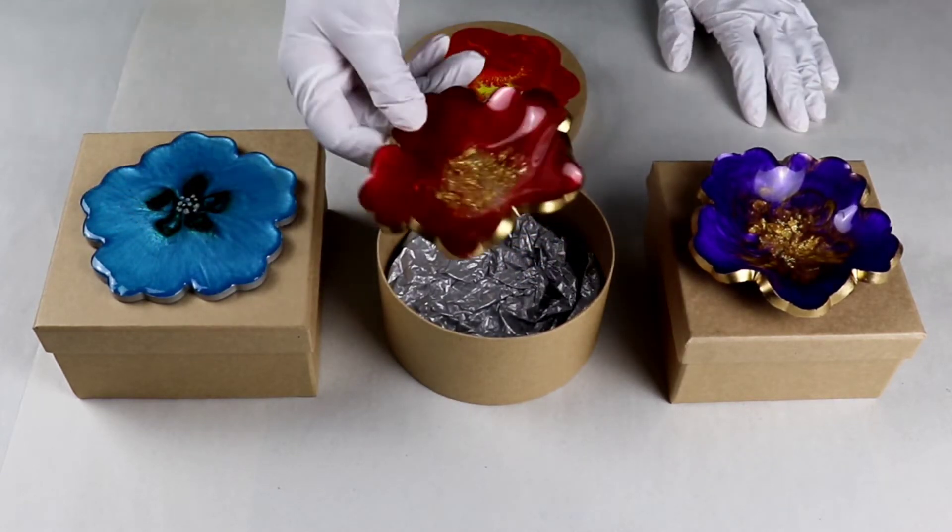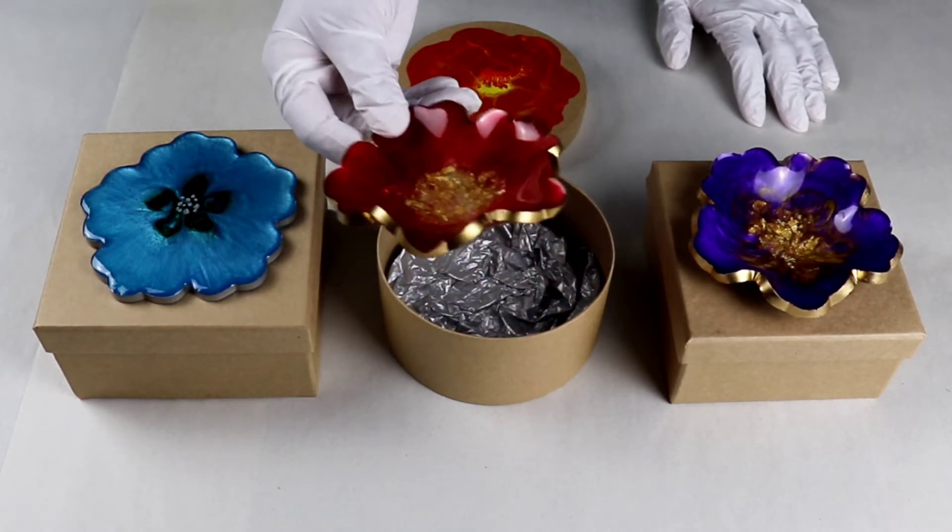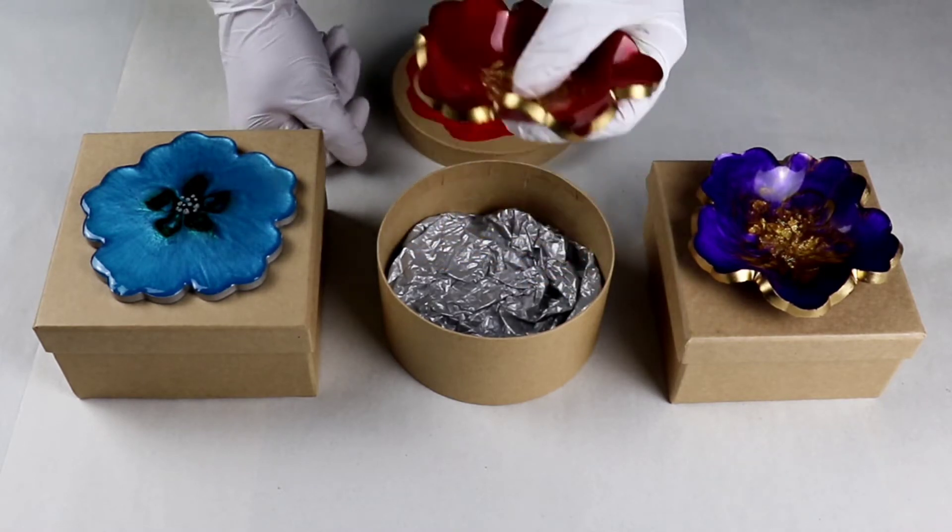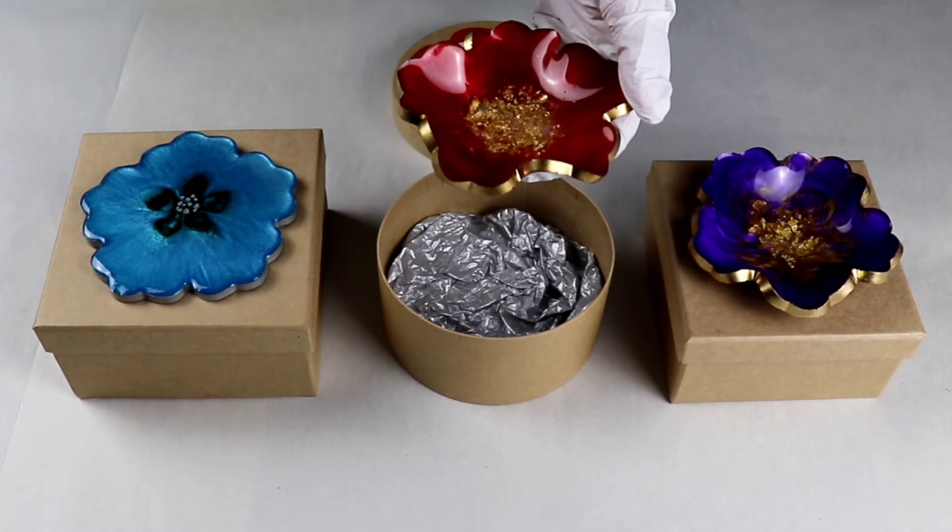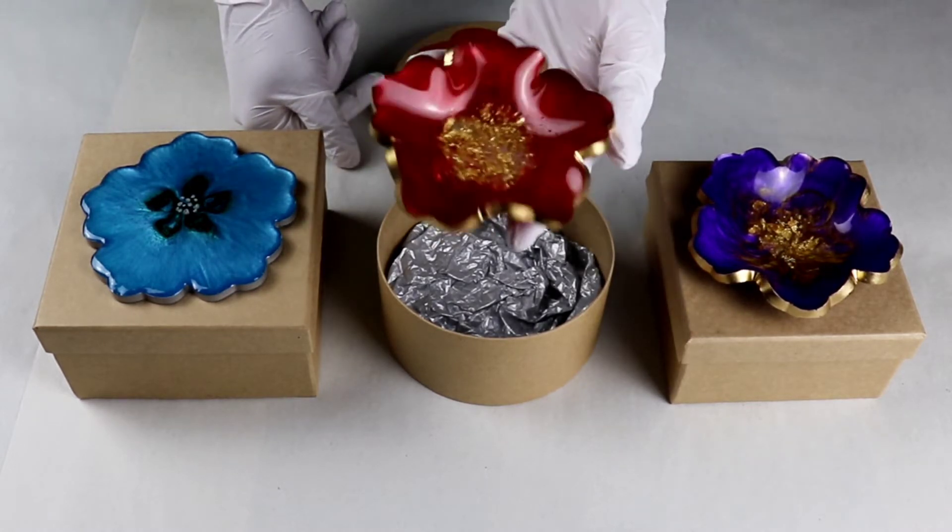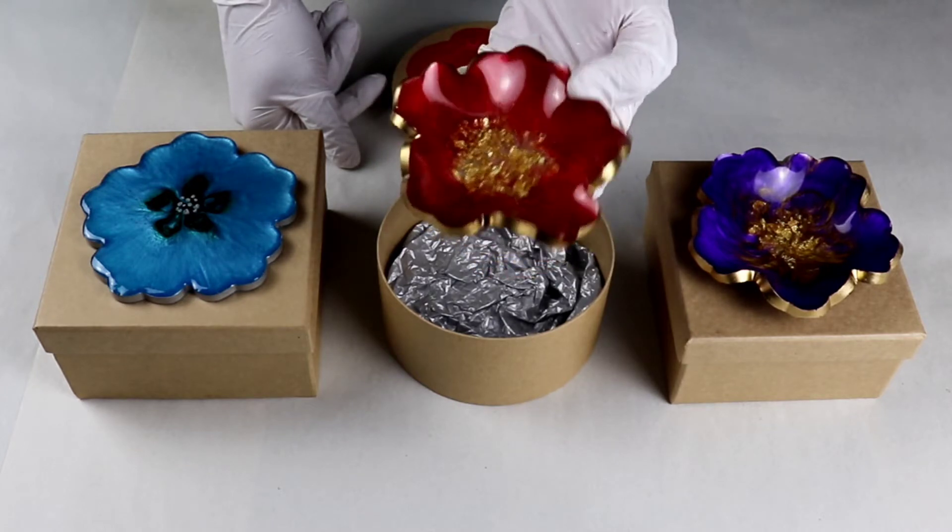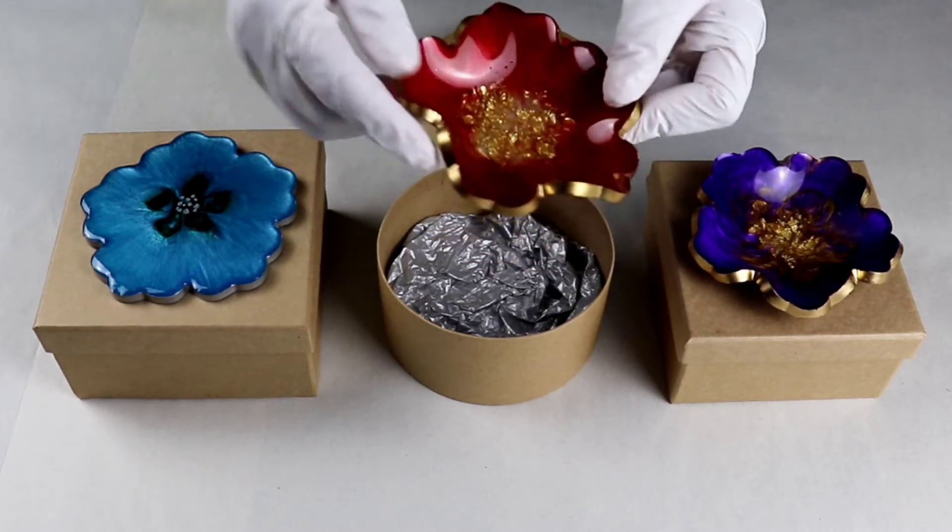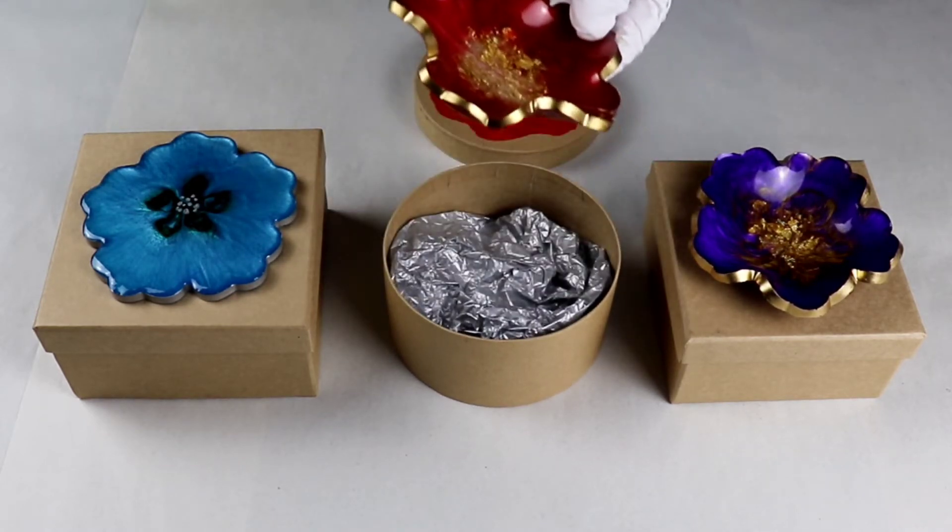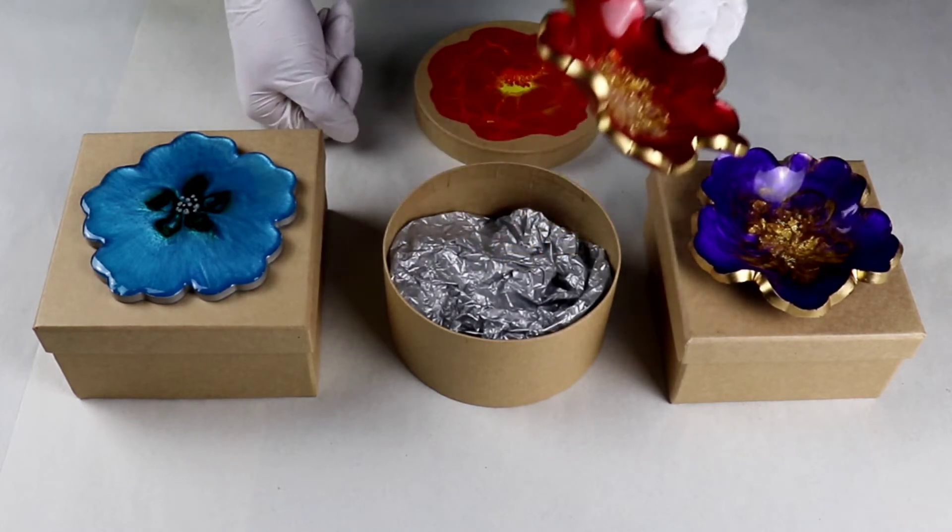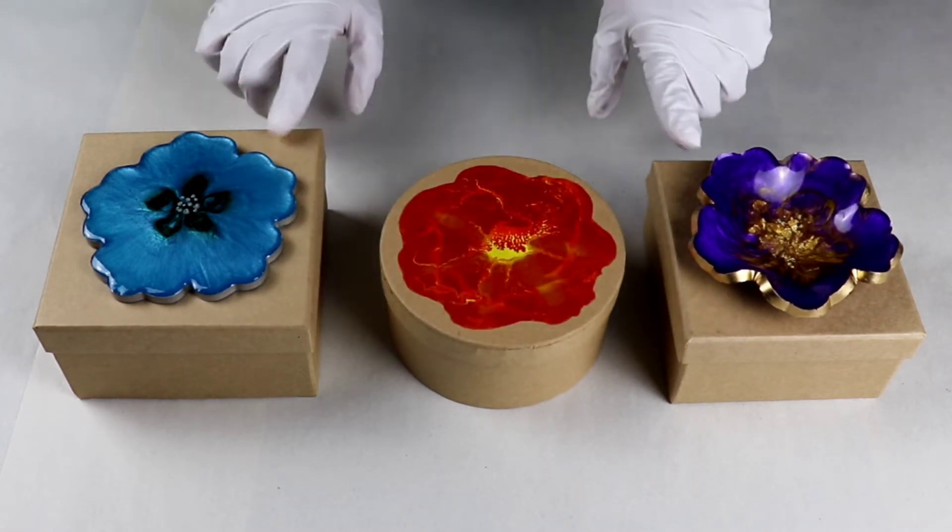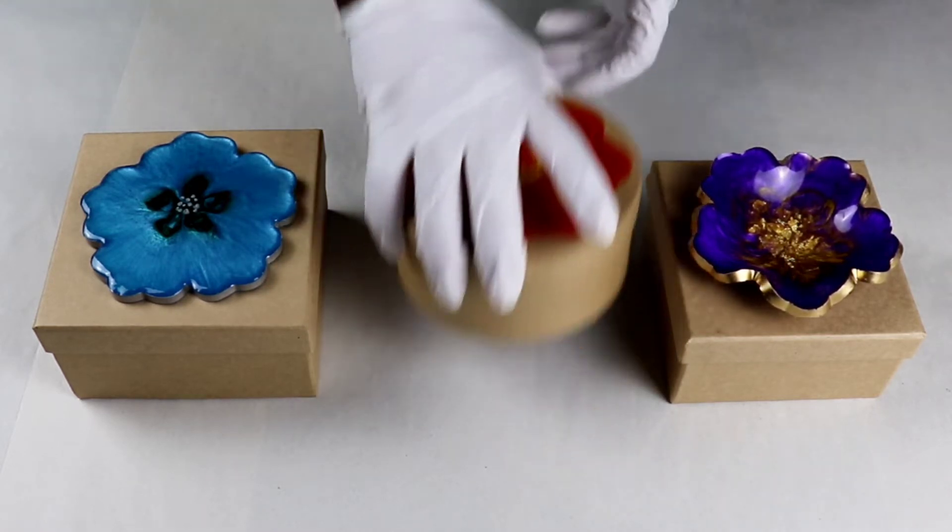These resin trinket dishes I created using crystal resin and mica powders. Let me know if you would like me to show you how I create these ripples in the flower, and I can do that too. I can do a quick tutorial to show you how I create these. So today I am going to make two boxes for these.